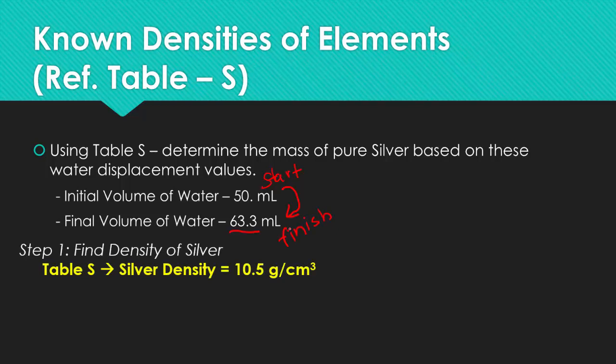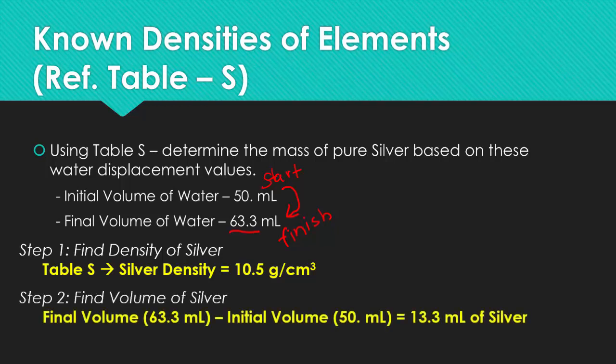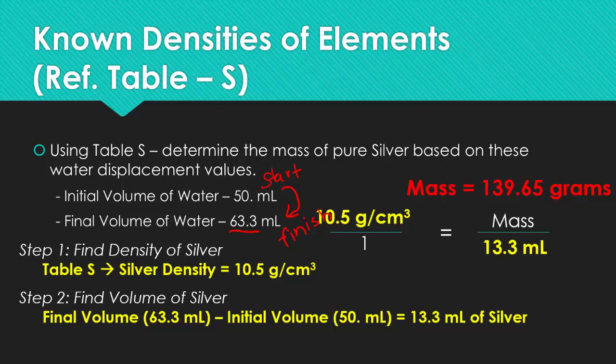Now looking at table S, you find silver and the density for it, which is quantitative, is 10.5 grams per centimeters cubed. Find the volume of silver, which is the difference from start to finish. Plug in the numbers, you put density, then you put the volume, cross multiply, and then you get the mass to be 139.65 grams. To check your work, all you have to do is 139.65 grams divided by 13.3 milliliters, and you should get 10.5.